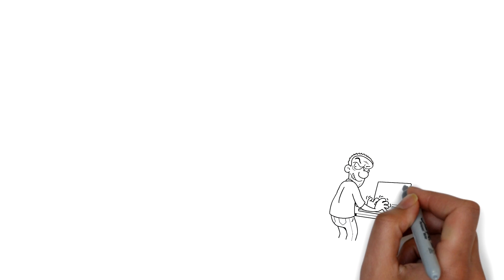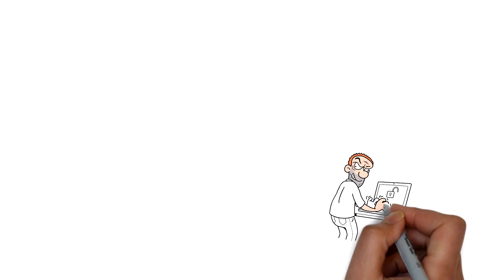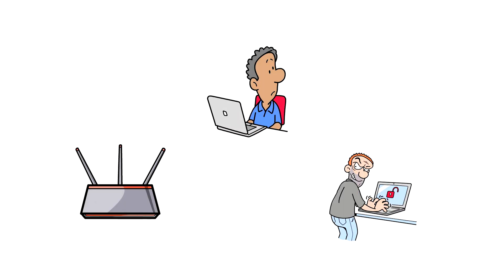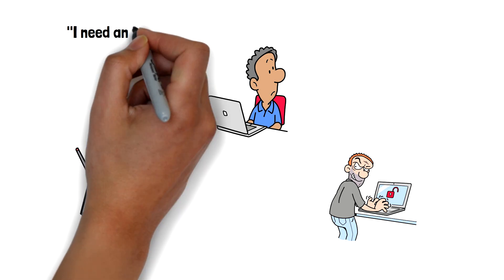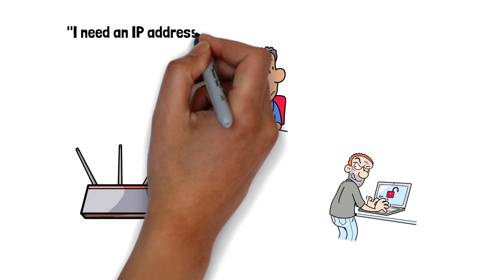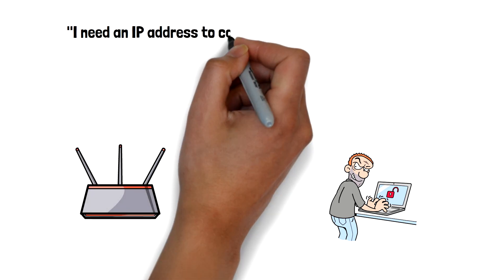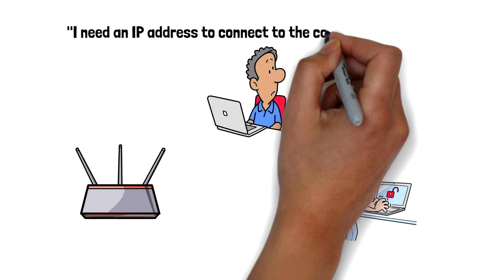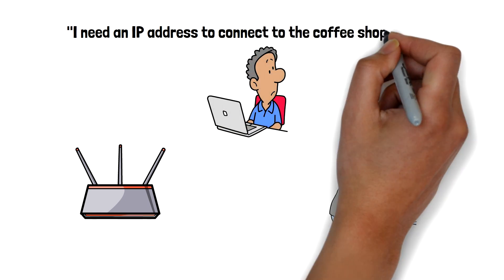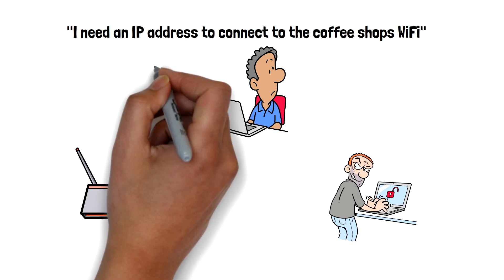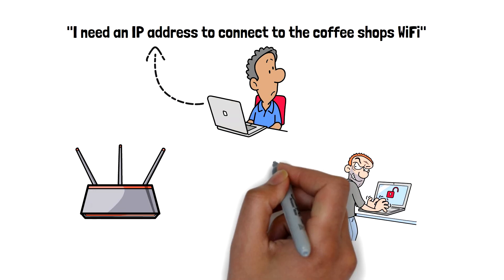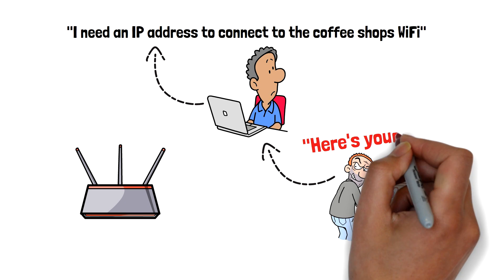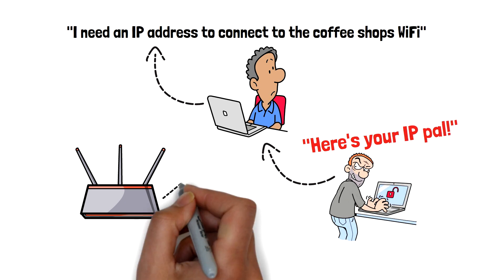Now, the DHCP server run by Ettercap on Steve's computer also tries to assign the IP address. If successful, Steve's computer will beat the coffee shop's router to the assignment, and he will then have all of this customer's information flowing through his computer before it reaches the coffee shop's Wi-Fi router. He's fooled the customer's computer into thinking that he is the one who hands out IPs on the network.